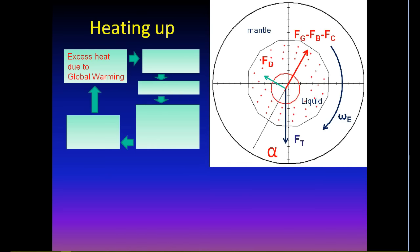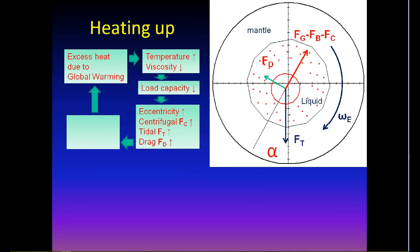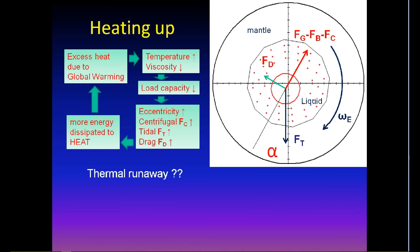What happens when the core and the surrounding liquid warm up due to global warming? Excess heat arising from insufficient cooling causes a temperature rise that lowers the viscosity of the liquid surrounding the core. Lower viscosity liquid loses some of its capacity to lift the core and the core eccentricity grows. Growing eccentricity causes centrifugal, tidal and drag forces to grow. Growing drag increases the energy dissipation, creating more heat. It is a thermal runaway system.